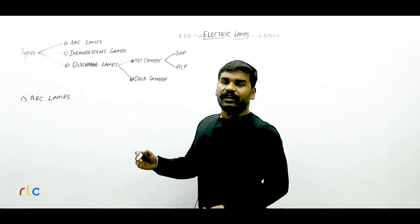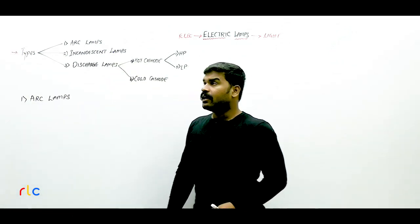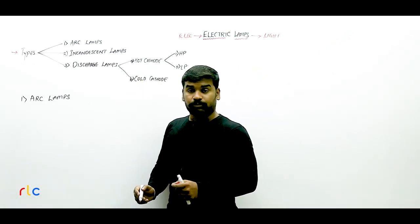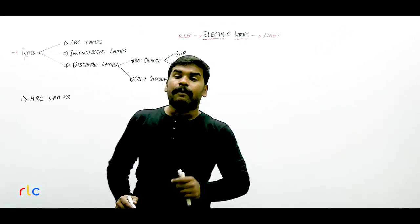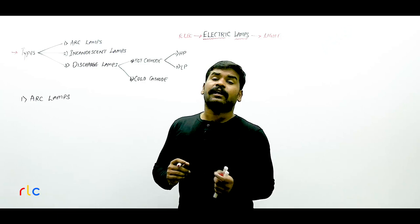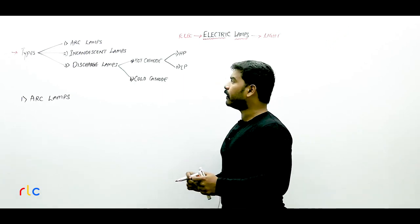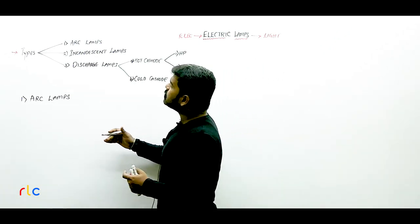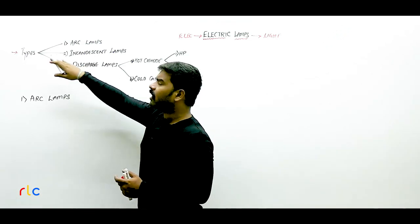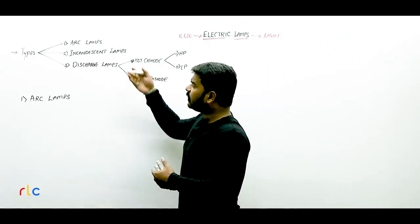In this session onwards we are going to study about different types of electric lamps. As you can see on the board, I have given you the different types of electric lamps. This classification you are seeing on the board you cannot find in any textbook, because there is no one proper or standard source to study this in a sequenced or organized manner. There are basically three types of classifications of electric lamps.